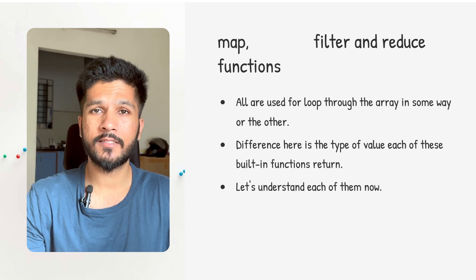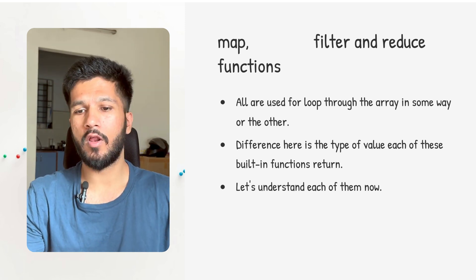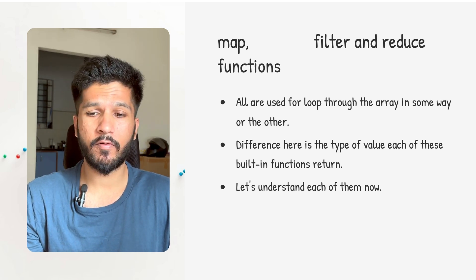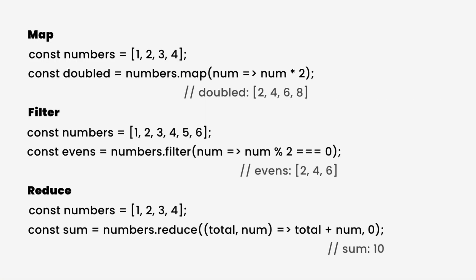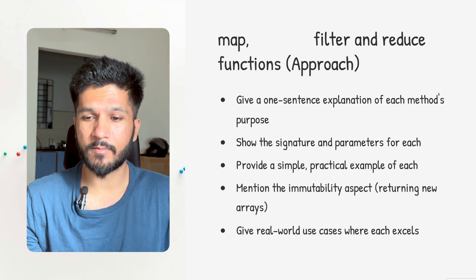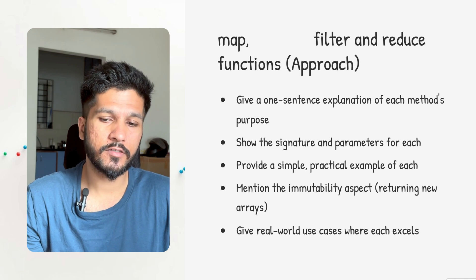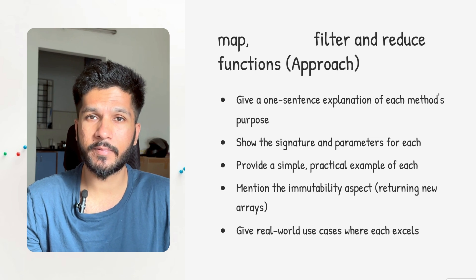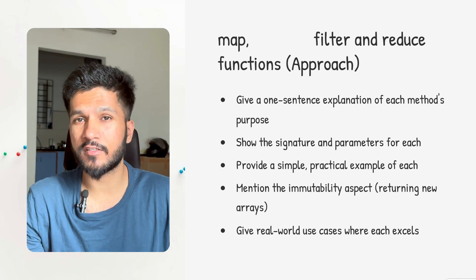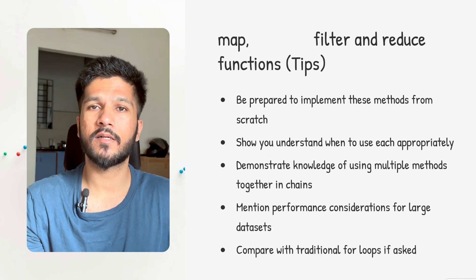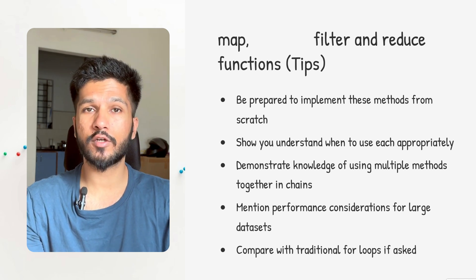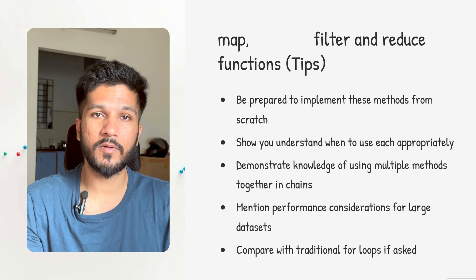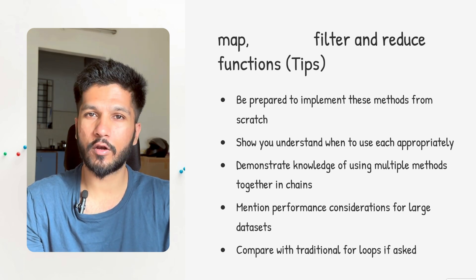Now let's move to the next question: map, filter, and reduce in JavaScript. All three array methods are provided by the array class, used to loop through an array in different ways. The key difference is the type of value each method returns. The approach: give a one-sentence explanation of each method, show the signature and parameters, provide a simple practical example, and mention immutability — all three methods return new values instead of changing the original array. Tips: be prepared to implement these from scratch, use them in chains, and mention performance considerations for large datasets.